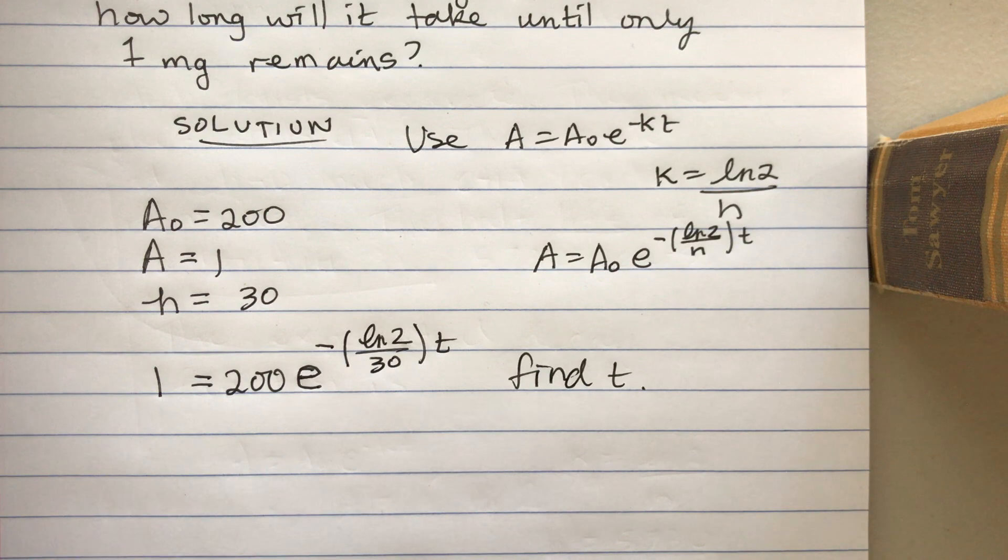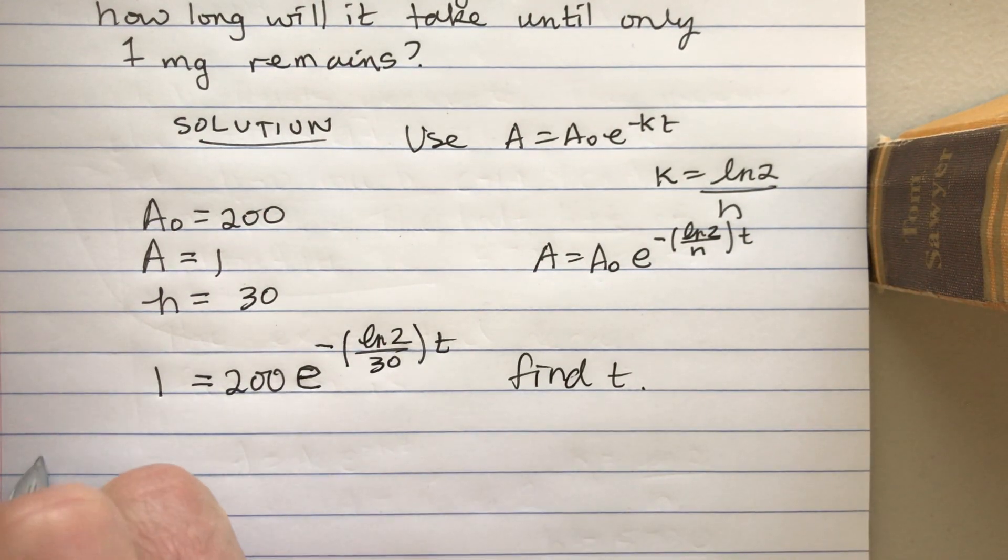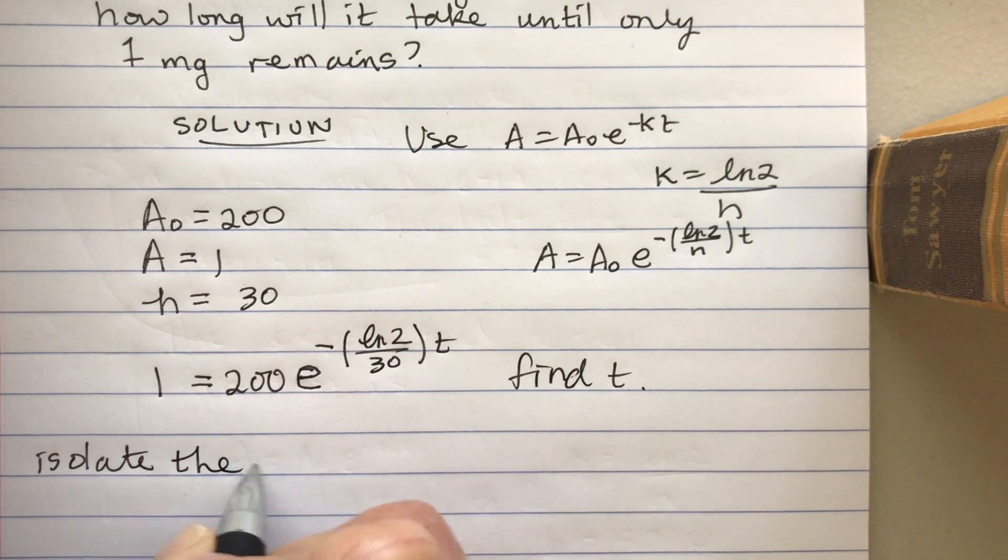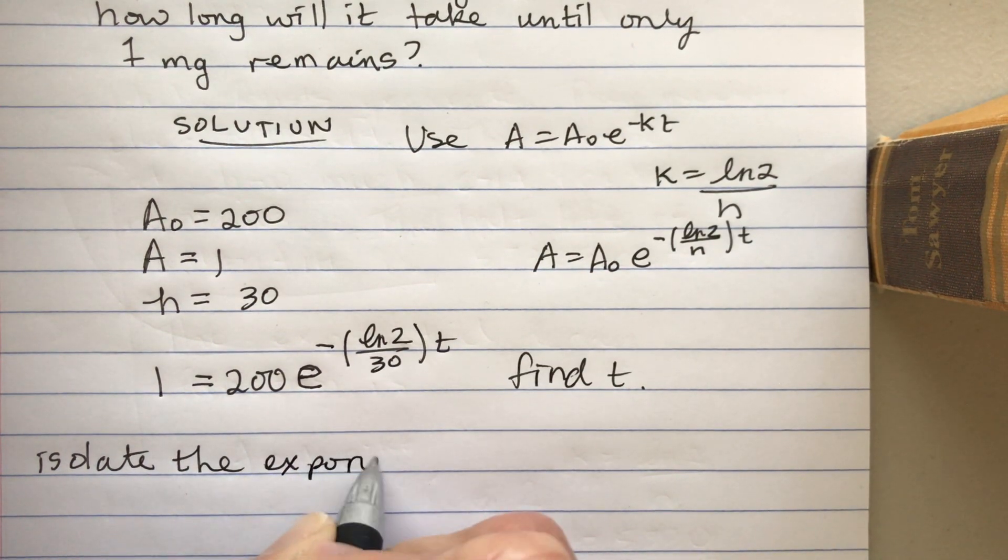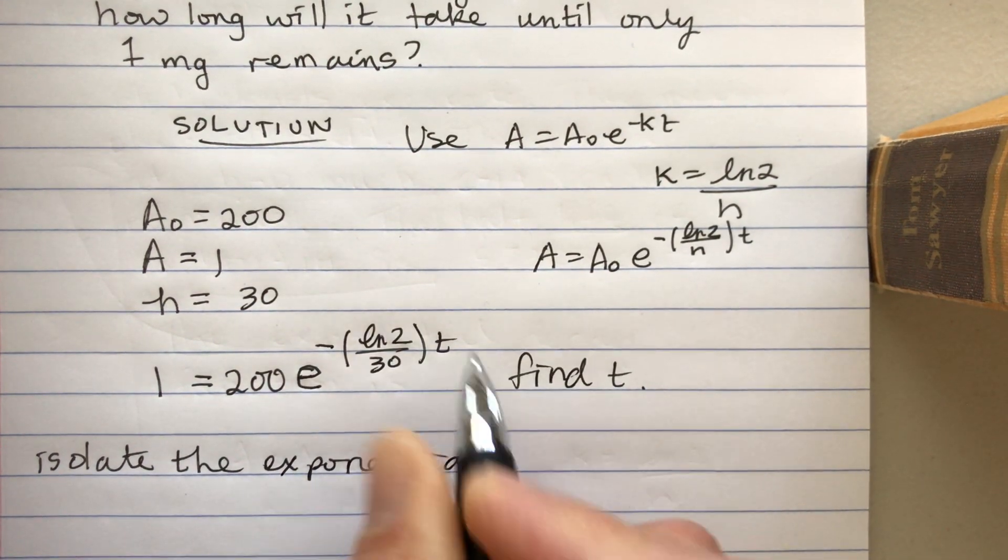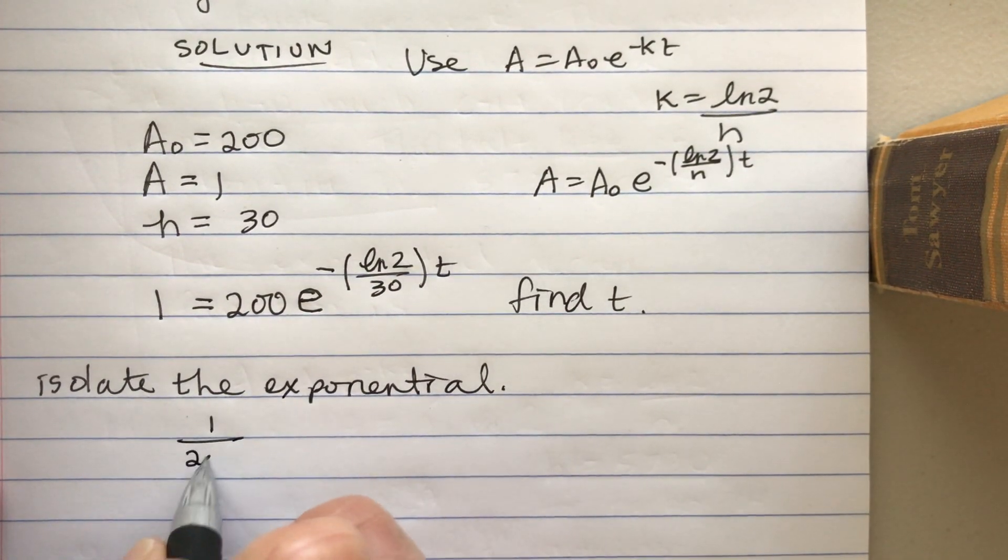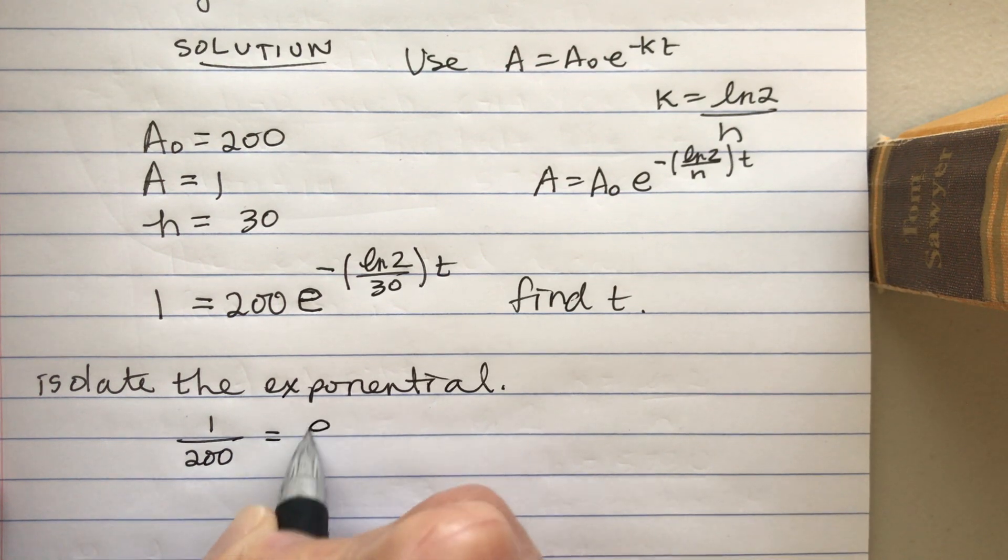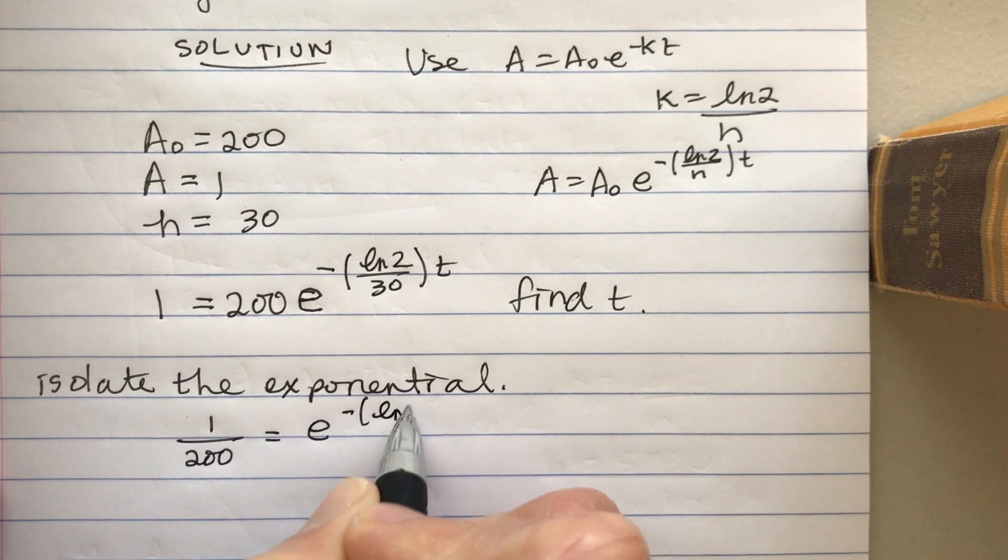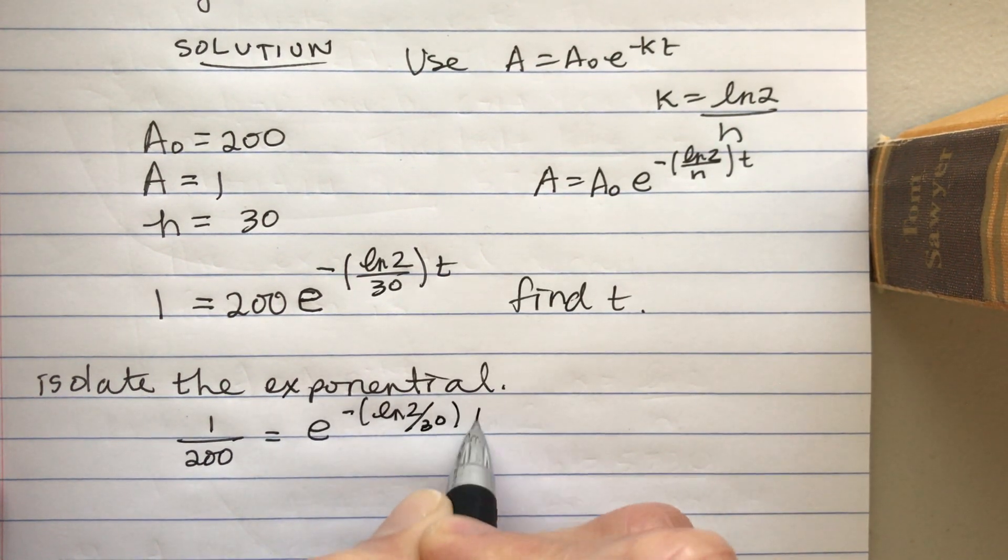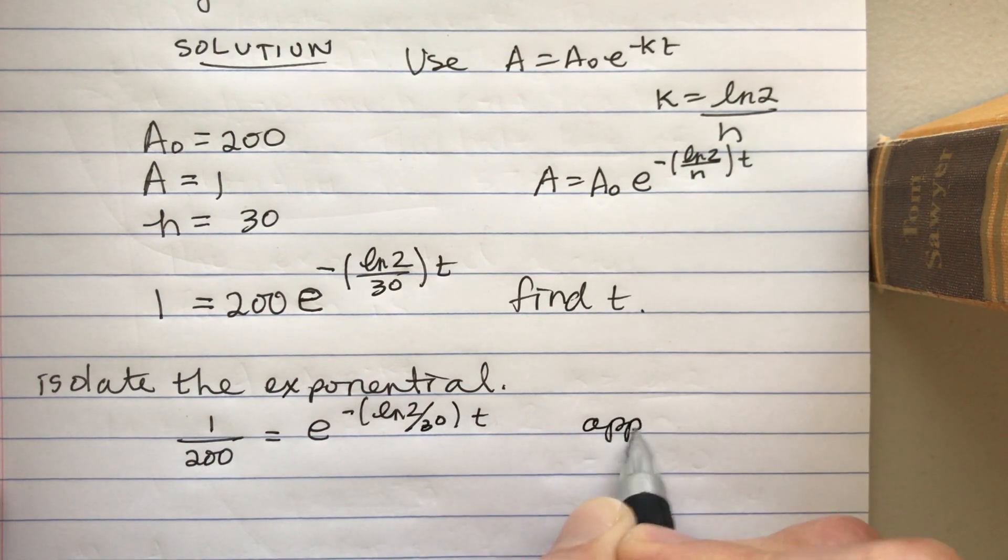Okay, so what we want to do is—always when we're solving for an unknown that's sitting up here in the exponent—we always want to isolate the exponent. So I'm going to write 1/200, and then I move on to the next step, which is apply ln.